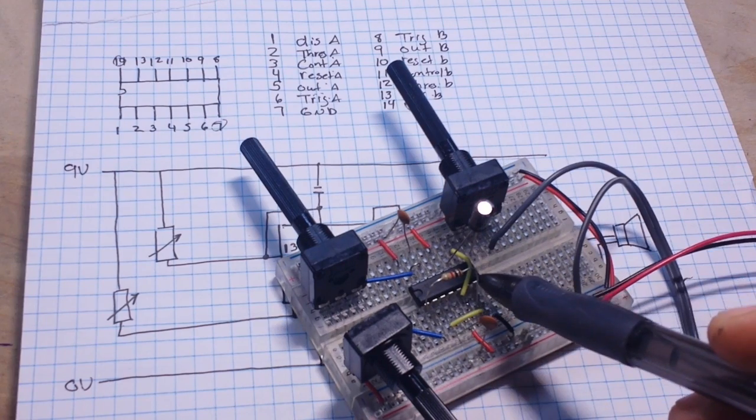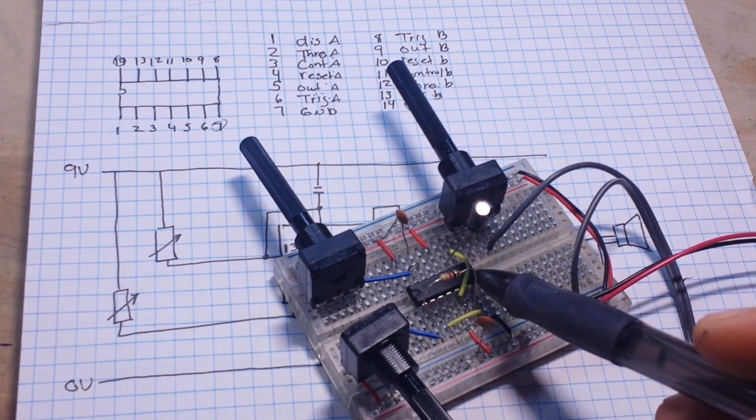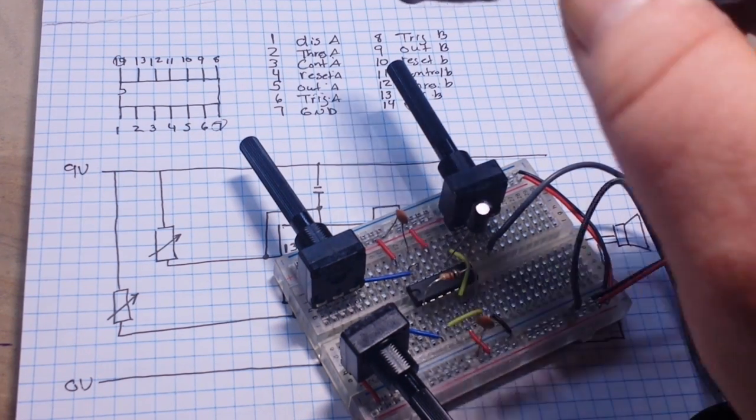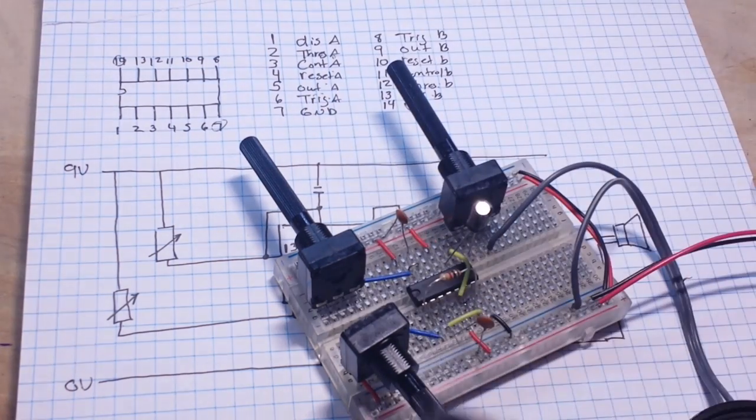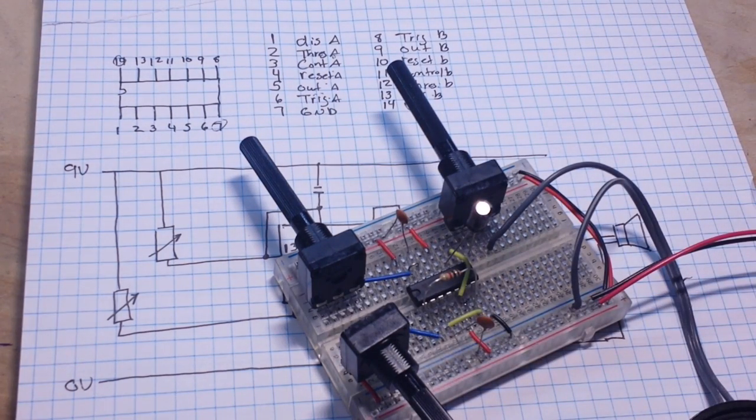There is our DC blocking capacitor. There is our 556, and you can see pins 5 and 8 are connected together. Also pins 2, which is our threshold, and our trigger on pin 6. Just like in the 555, really easy to set it up.